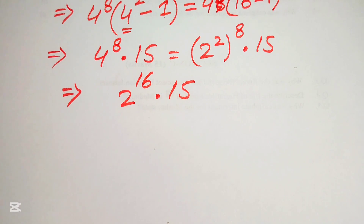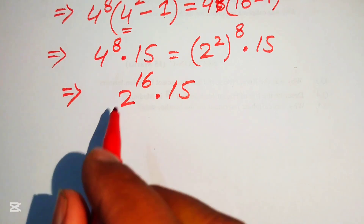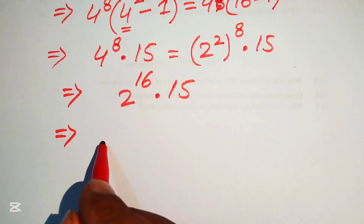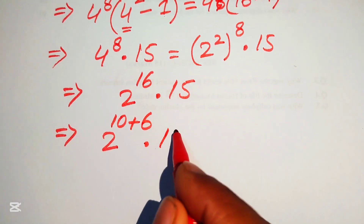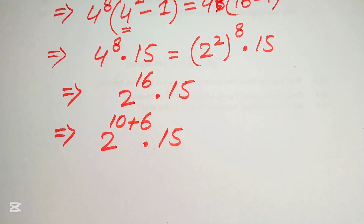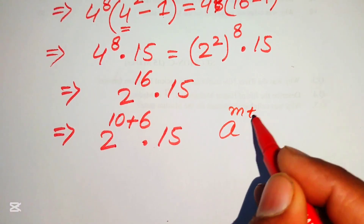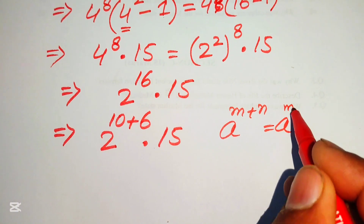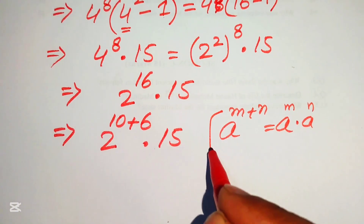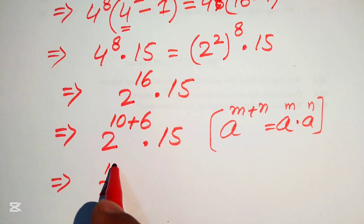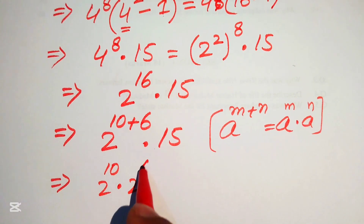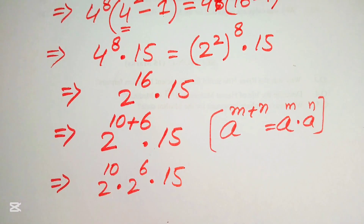Now we focus on 2 to the power of 16. We break the 16 and write it as 2 to the power of 10 plus 6, multiplied by 15. Applying the exponent law again, we split this into 2 to the power of 10 multiplied by 2 to the power of 6, all multiplied by 15.